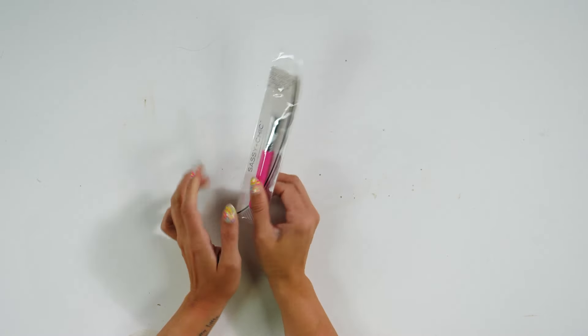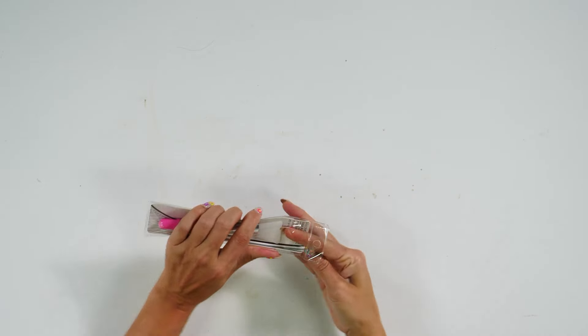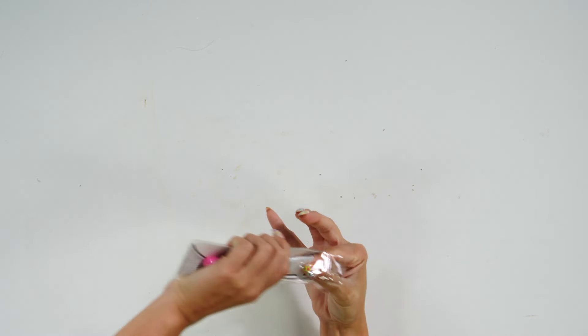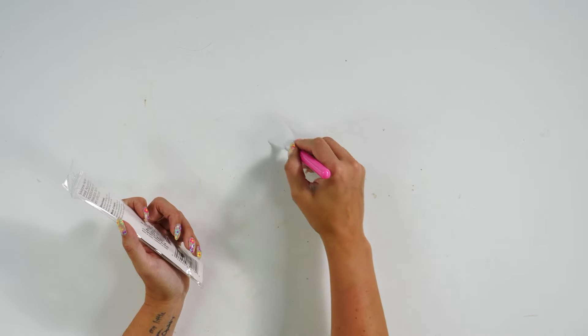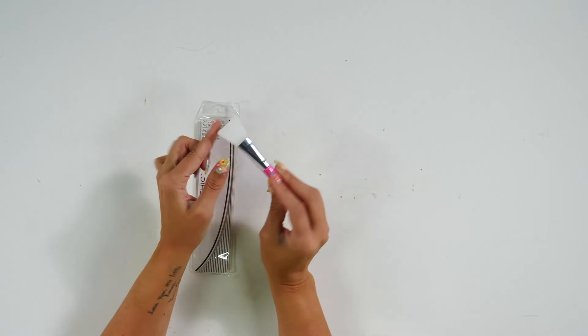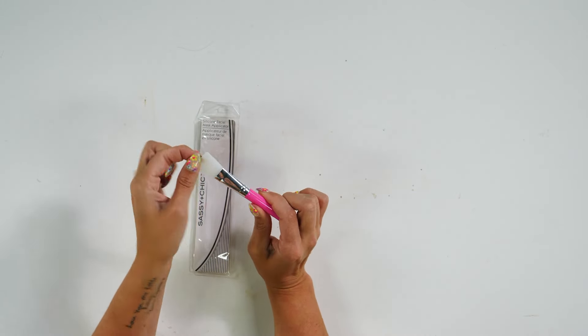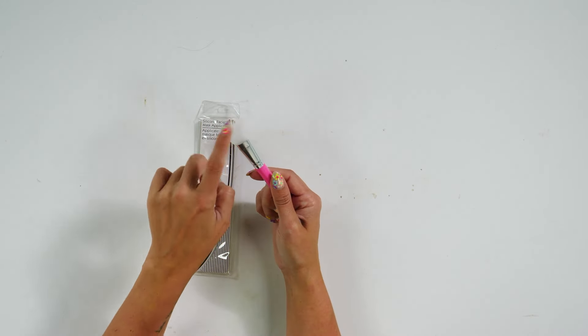But for the days that I don't want to feel it, I can use this silicone facial mask applicator. What you would do is take this and spread the glue and make a nice thin even layer. And even if it dries on this, because it is silicone, all you have to do is peel off the residue and it doesn't get stuck onto the end of this.